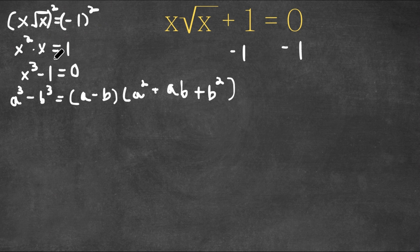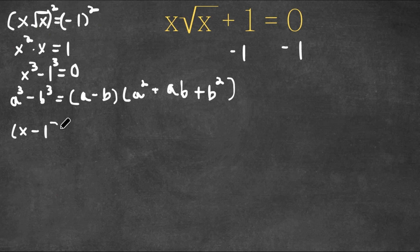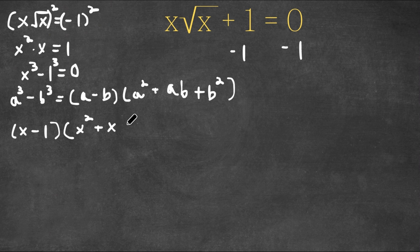One is the same thing as one to the power of three. So if we plug in our values here, we get (x minus one) times (x squared plus x times one, which is simply just x, plus one squared, which is simply one). And this is still equal to zero.